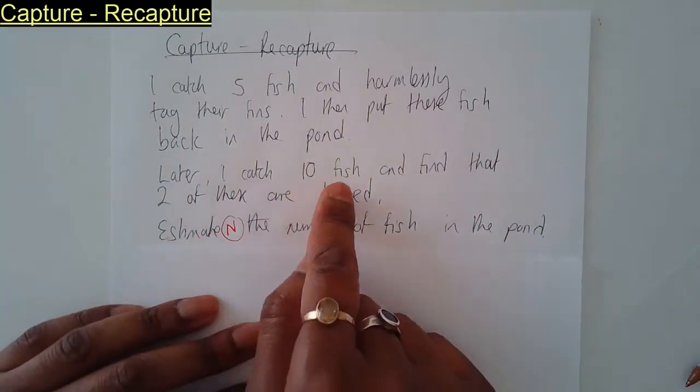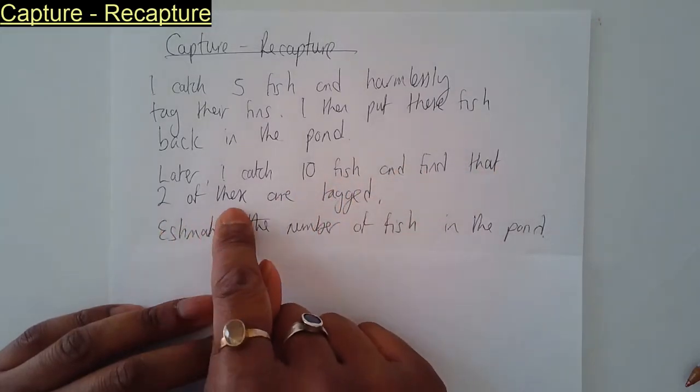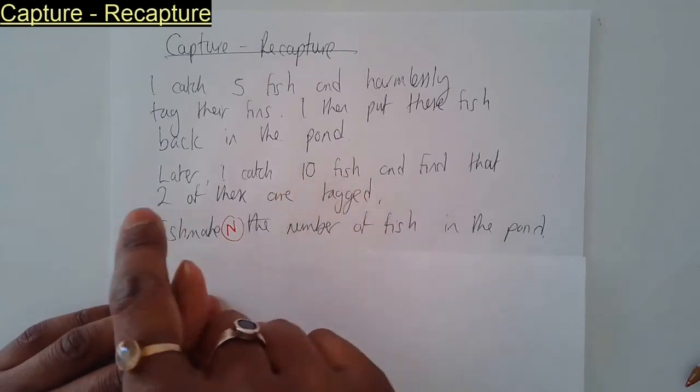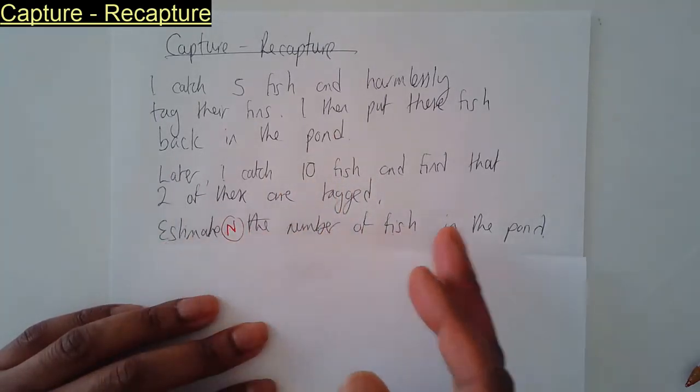Later, I catch 10 fish and find that two of these are tagged. Out of the 10 fish that I've caught the second time around, two of those happen to be tagged. Estimate the number of fish in the pond.